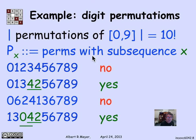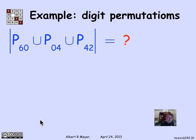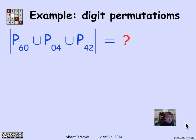If I let P_x be the permutations with subsequence x, then the permutation with a 4-2 is in P42, and the permutation with both 0-4 and 4-2 is in P04 intersected with P42. So what we're really asking for is the size of the union of three sets: P60 union P04 union P42. As we saw, these sets are not disjoint, so I'll need inclusion-exclusion for three sets instead of two.